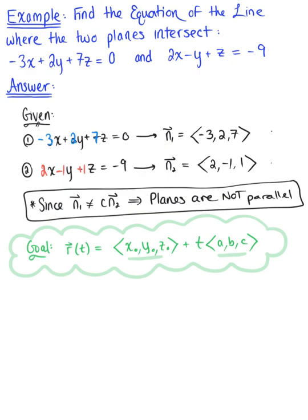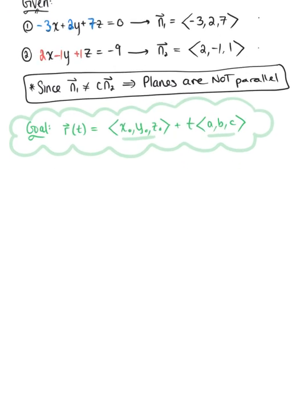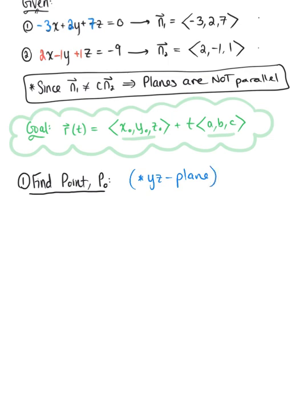Part one: we need to find a point where these two planes intersect one of the coordinate planes. So let's find the point p-naught. You have three options, and for this example, let's find where they intersect the yz-plane. So we are finding where those two planes intersect the yz-plane. If we're finding that point, we go ahead and let x be equal to zero. The first equation becomes 2y plus 7z is equal to zero, and the second equation, letting x be zero, leaves us with minus y plus z is equal to negative nine.